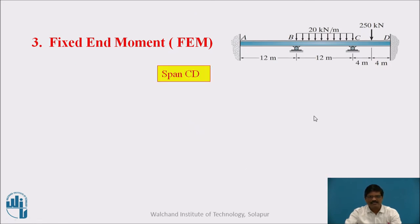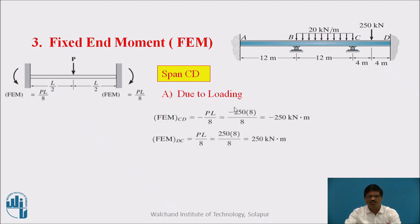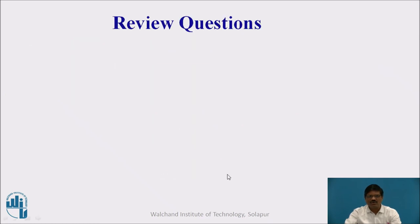For the last span CD, there is no sinking effect since sinking occurs only at B. Therefore the fixed end moment is due to loading only. This is the standard case: FEM_CD = −PL/8 = −250 kNm (anti-clockwise, negative) and FEM_DC = +250 kNm (clockwise, positive). There is no FEM due to sinking for span CD.